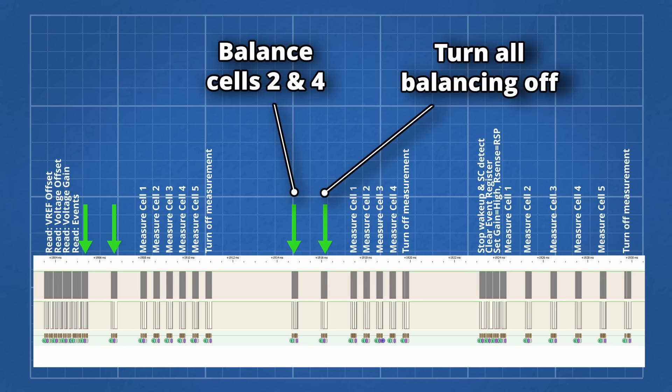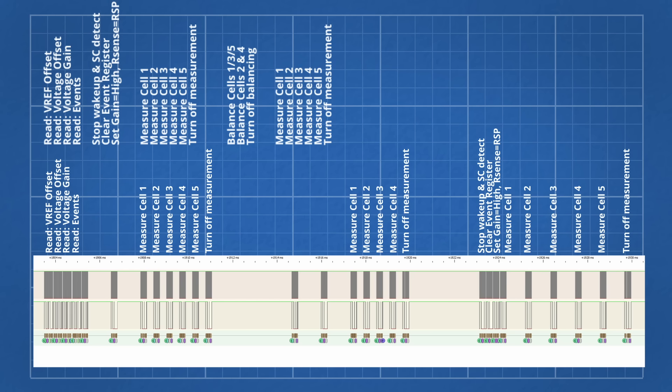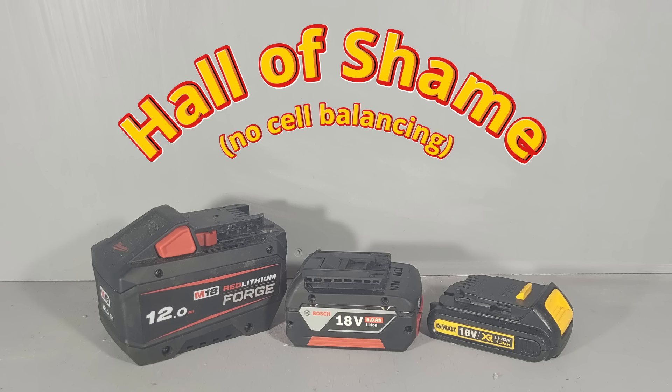At first I thought this was bonkers, but now I think there's a method to their madness. By turning on cell balancing for 1ms, they're putting a small discharge current through the cells which might help to identify bad cells. Although I would have thought a better way to do this would be to measure the cell voltages, then do a short discharge via the balancing MOSFETs, then measure the cell voltages again to compare. In any case, it looks like Bosch is joining Milwaukee and DeWalt in the hall of shame of brands that don't balance their cells.